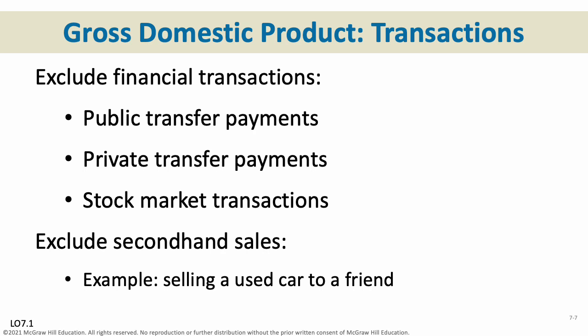Secondhand sales and used goods are also excluded. If you sell your old car to a friend, that has nothing to do with GDP. Your 1999 Honda counted towards GDP in 1999 when it was brand new. If you resell it as an old car to your friend, it's no longer part of GDP — it's just a private transaction. Anytime you sell anything secondhand, those used products have nothing to do with GDP.